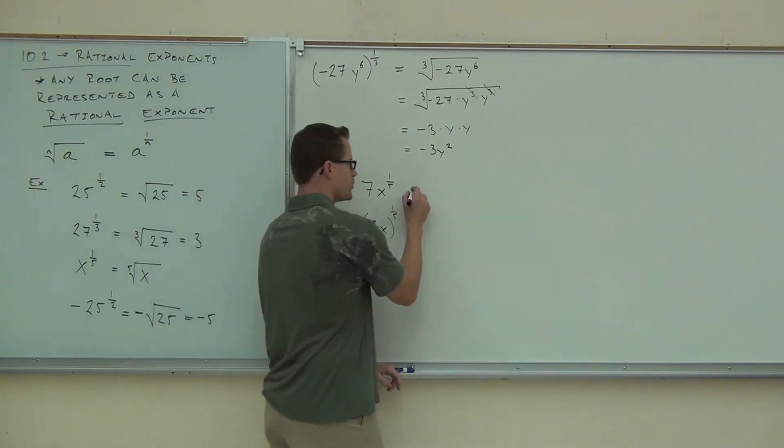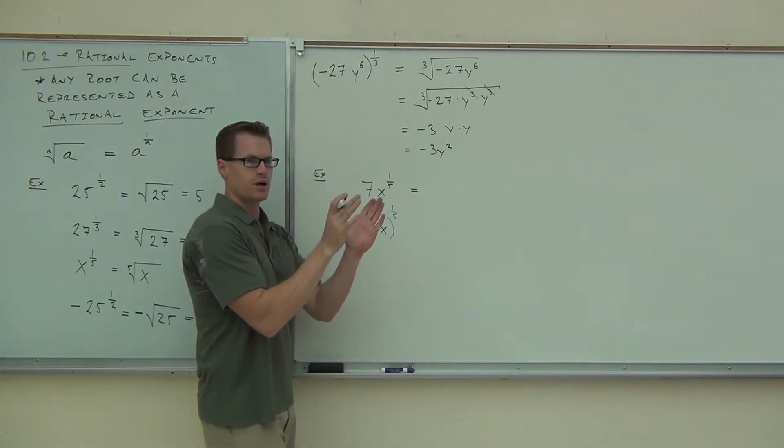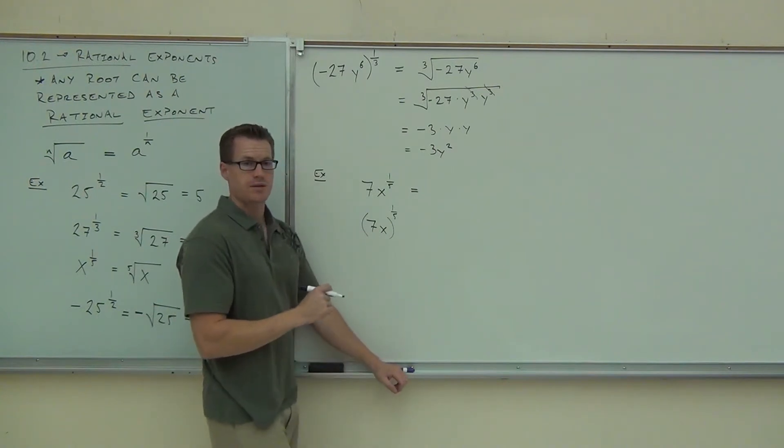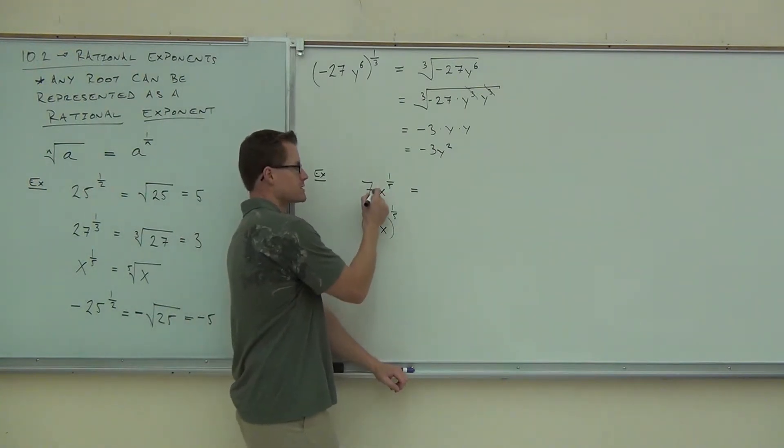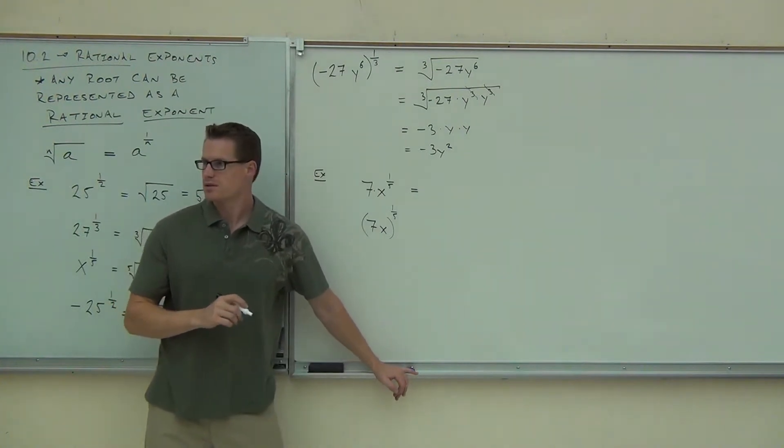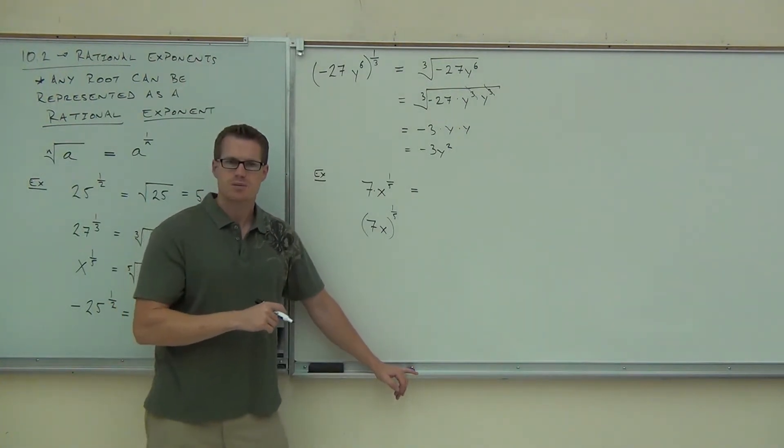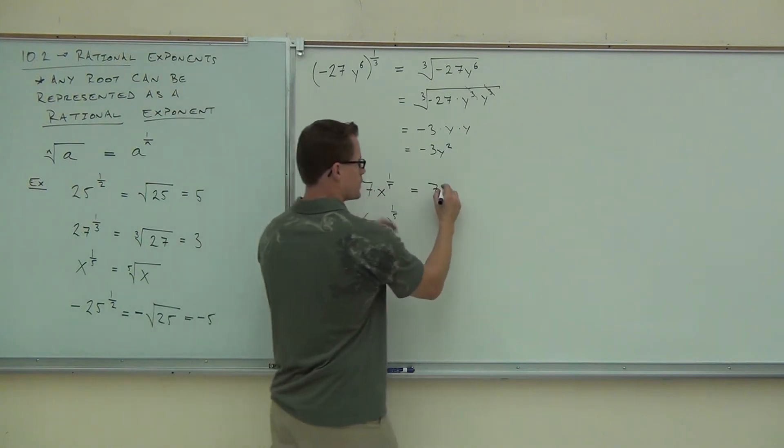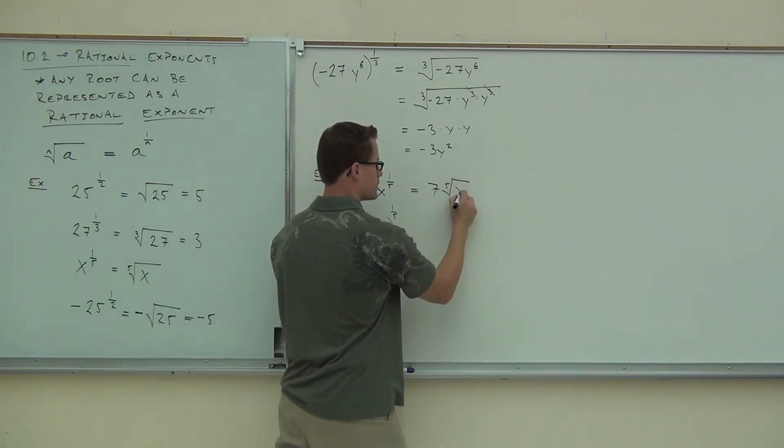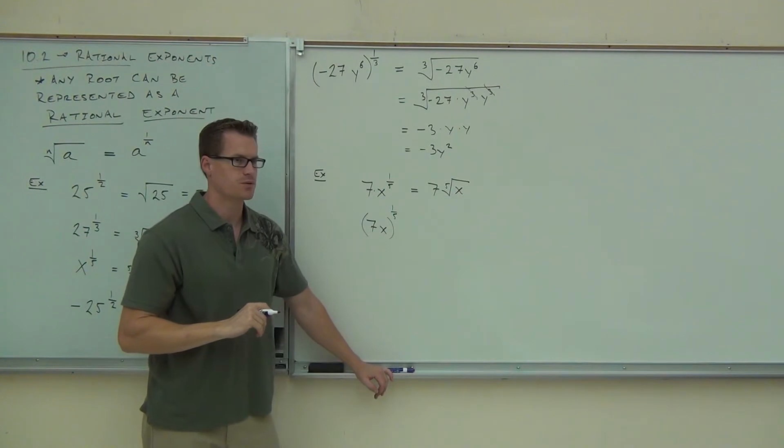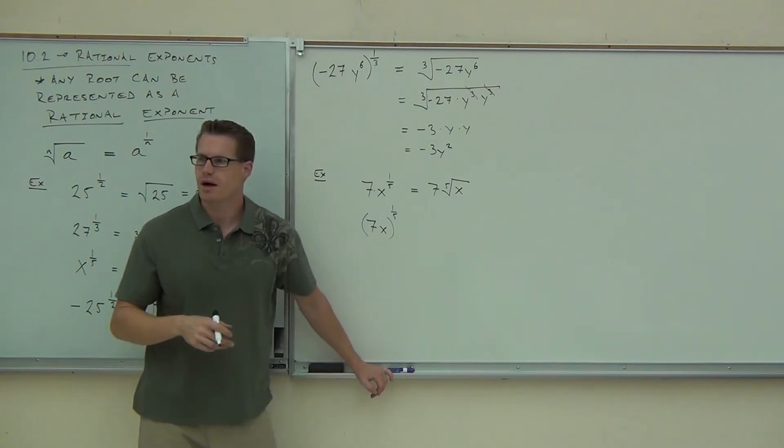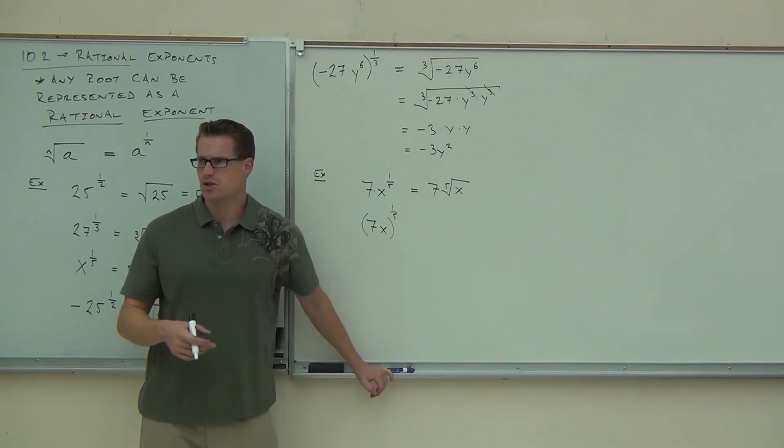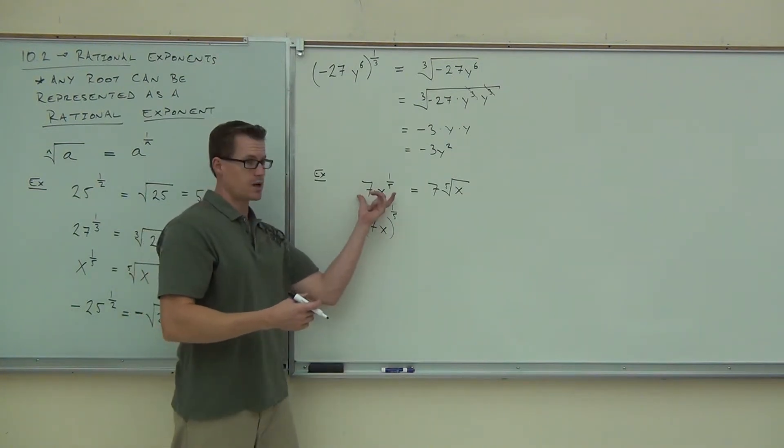So on this example, is the 7 going to be inside of our root or not? What do you think? No, it's outside. What this says right here is 7 times x to the 1/5th. It's like the negative 1. Use your order of operations and think about this. This says I'm doing 7 times the 5th root of x. The 7 is not inside the radical because it's not in the parenthesis. Are you okay on that one?